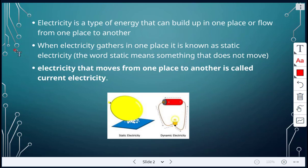So when it gathers in one place, that's what we were looking at last class, that would be static electricity. The word static itself means something that doesn't move. And then electricity that moves from one place to another, that would be called current electricity.